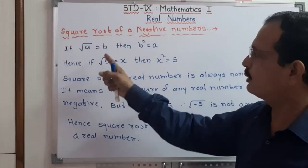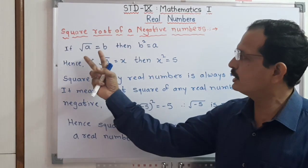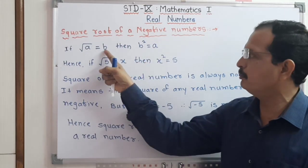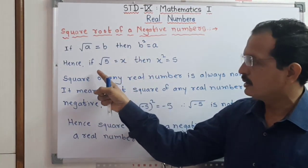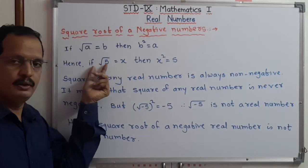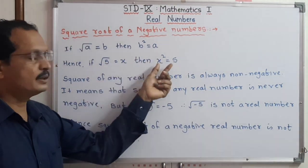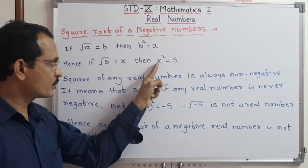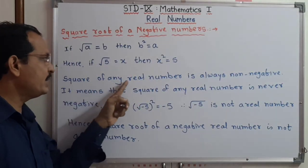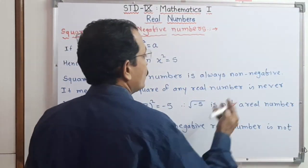All of you know that if root A equals B, then B squared equals A. That means if we take the square of both sides, we get: the square of root A is A, and B squared is B squared. Similarly, if root 5 equals X, then squaring gives X squared equals 5, meaning the square of X is a positive number. Therefore, the square of any real number is always non-negative.